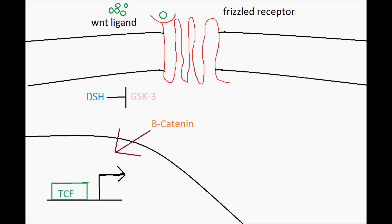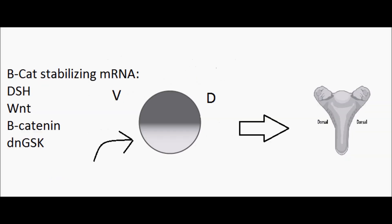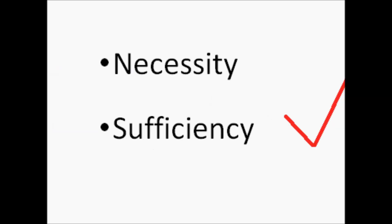Beta-catenin without inorganic phosphate will be able to enter the nucleus and interact with TCF allowing transcription to take place. Beta-catenin has a higher binding affinity for TCF than the co-repressor Groucho does. There is a lot of evidence that Wnt signaling is involved in dorsalization. Sufficiency of Wnt signaling can be proved by injecting mRNAs that stabilize beta-catenin into the ventral side of an embryo. This includes Wnt, Disheveled, beta-catenin, and this induces the conjoined twin embryo. This shows dorsalization in an ectopic location.